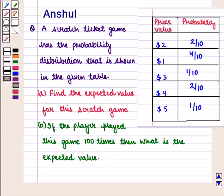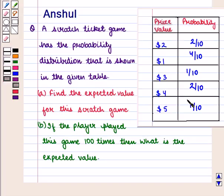Hello and welcome to the session. In this session we shall discuss the following question: a scratch ticket game has the probability distribution shown in the given table. In part A, we need to find the expected value for this scratch game, and part B says if the player played this game 100 times, then what is the expected value?